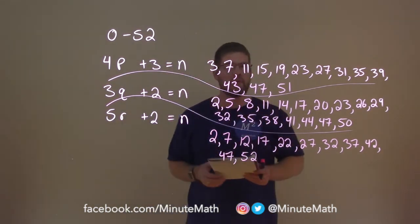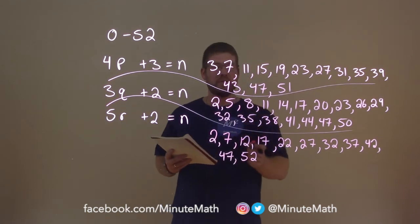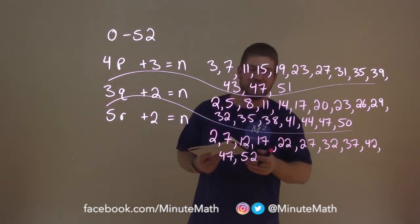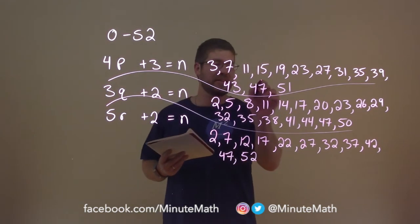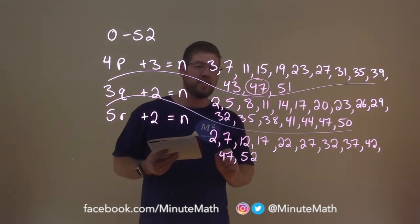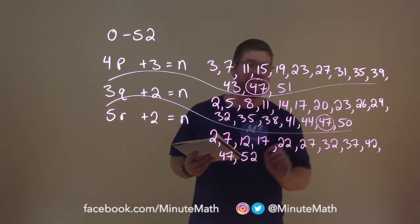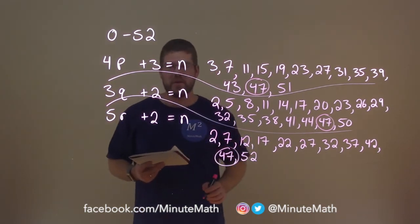So what we're looking for here is which number is in all three sets. And that is forty-seven. Forty-seven is in the first set, forty-seven is in the second set, and forty-seven is in the third set.